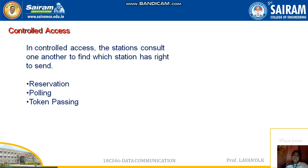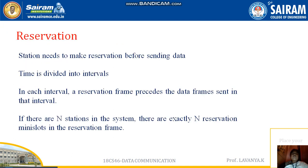Control access has three methods: the reservation method, the polling method, and the token passing method. The reservation method means each station makes a reservation before sending data — a kind of pre-booking of time before sending. We call this the reservation method.